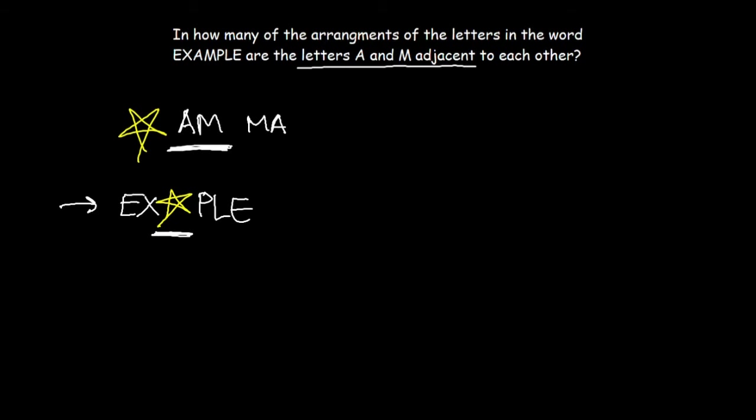After doing this, we basically use the same basic permutation formula that we learned in the first video. Since there are six letters to choose from and we're making a six letter word, that's basically 6P6. This formula can be expressed as six factorial.